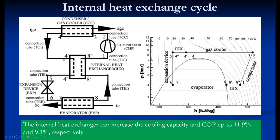In the internal heat exchanger, the heat of the hot gas line is given to the low pressure, low temperature line. The suction line becomes superheated and the high pressure side undergoes slight de-superheating. So in this way, the COP improvement is around 10%. This is the first modification where with the help of a single heat exchanger, we can improve the COP of the transcritical cycle.